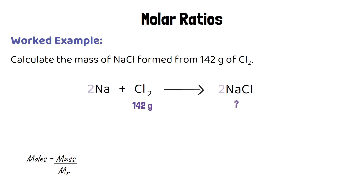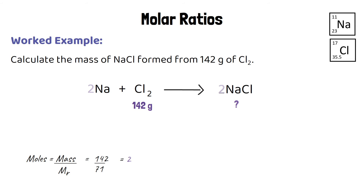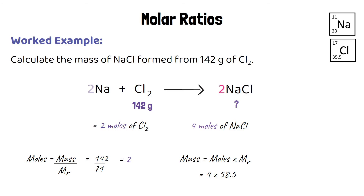Using moles equals mass over relative formula mass: the mass is 142 grams and the relative formula mass of chlorine is 2 lots of 35.5, which is 71. So 142 divided by 71 gives us 2 moles of chlorine. Since we make twice as many moles of sodium chloride as moles of chlorine, 2 moles of chlorine produces 4 moles of sodium chloride. Then 4 moles times the relative formula mass of sodium chloride (58.5) gives 234 grams. Starting with 142 grams of chlorine, we can make up to 234 grams of sodium chloride.